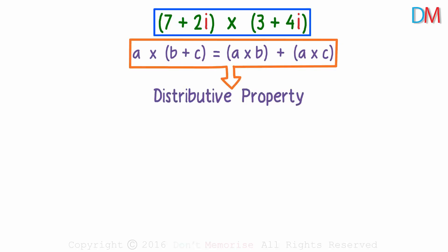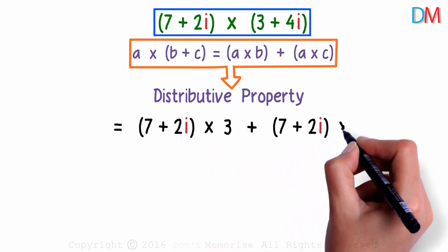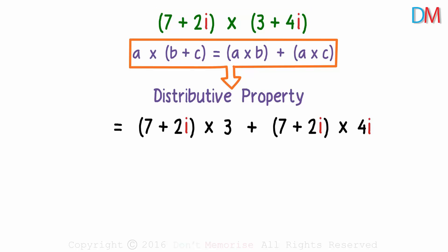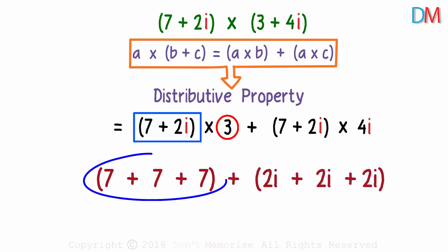So this can be written as 7 plus 2i times 3 plus 7 plus 2i times 4i. Now focus on the first part, 7 plus 2i times 3. It will be this number added thrice. 7 plus 2i can be added thrice to get 7 plus 7 plus 7 as real part and 2i plus 2i plus 2i as the imaginary part. This is 21 and this is 6i. The result is 21 plus 6i.